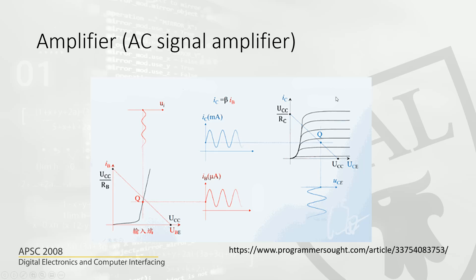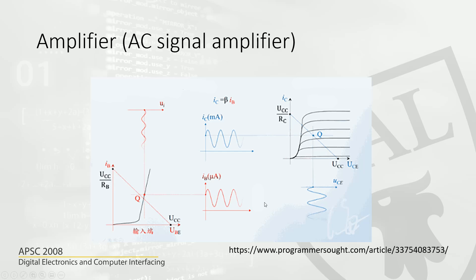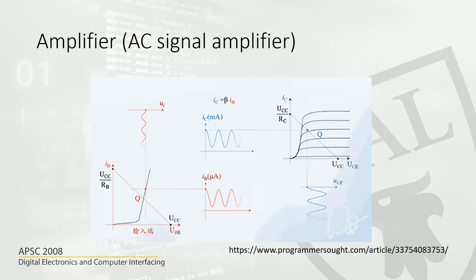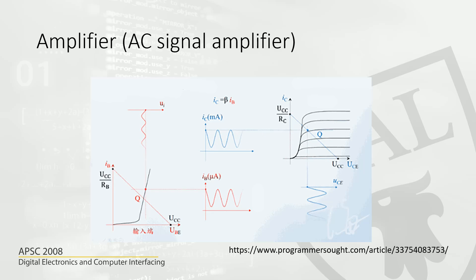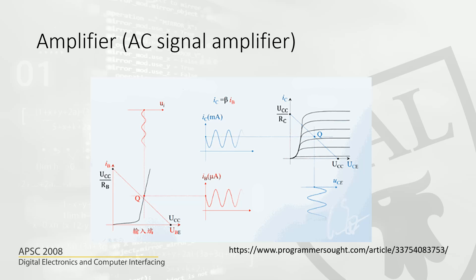If you want to use a transistor as a switch, you operate it in the cutoff and saturation modes. In these two modes, the transistor is either turned off or turned on. In this course, we will concentrate on the transistor being used as a switch rather than as an amplifier.